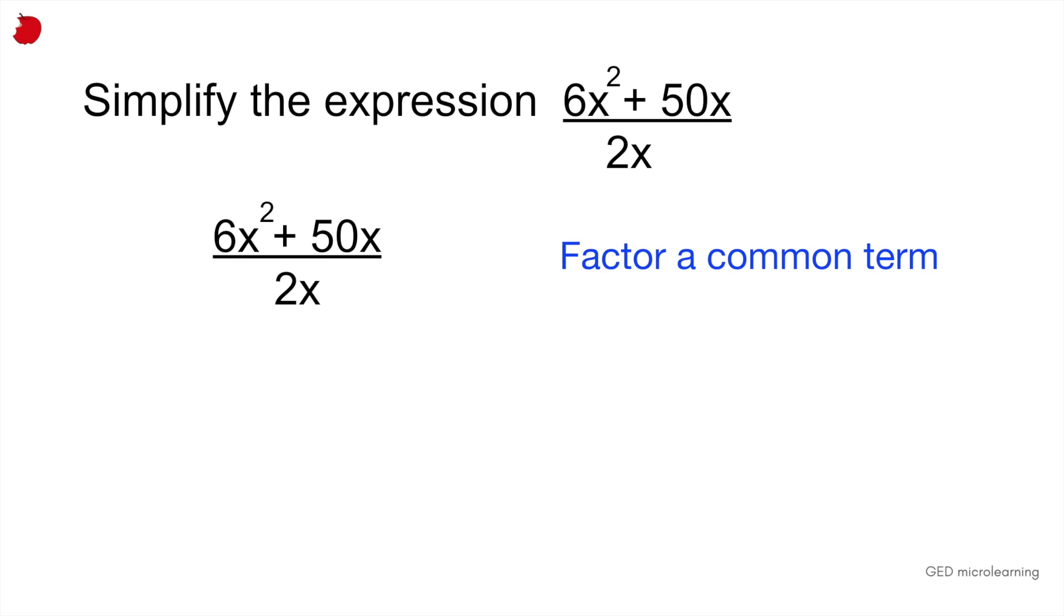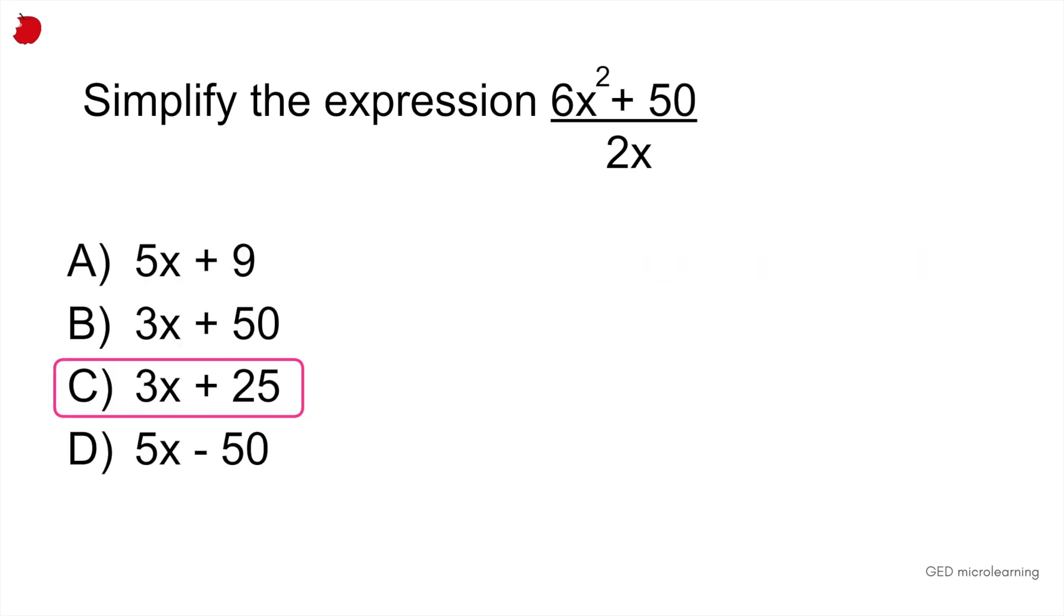So in this case, the factor that I chose was 2X. So if you multiply 2X by 3X, that would give you 6X squared, which you can see in the original equation. And then if you multiply 2X by 25, that would give you 50X, which you also see in the numerator. So now look at that. How wonderful you have 2X divided by 2X. So you can go ahead and get rid of those two X's. All right. So your correct answer would be C.